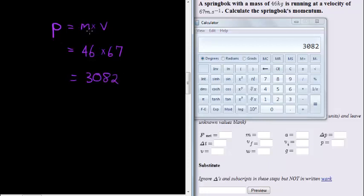And what's the unit? Well, we took mass times velocity. So it's kilogram meters per second. That's it.